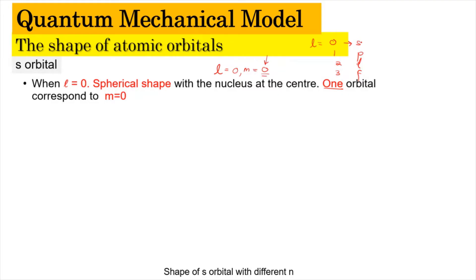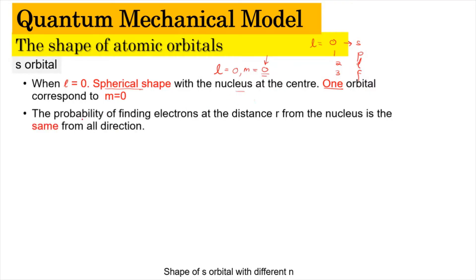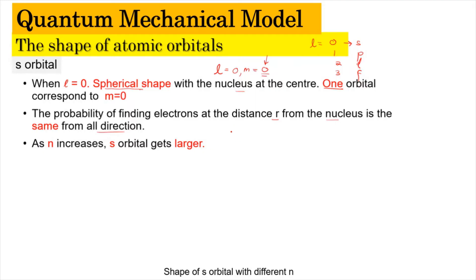The S orbital has a spherical shape with the nucleus at the center. Because of this spherical shape, the probability of finding an electron at a given distance from the nucleus is the same in all directions. When the energy level increases, the S orbital gets larger. To sketch the S orbital, we need three axes since we are describing a 3D region.